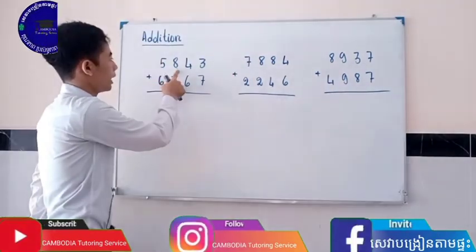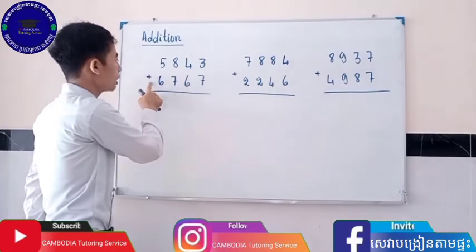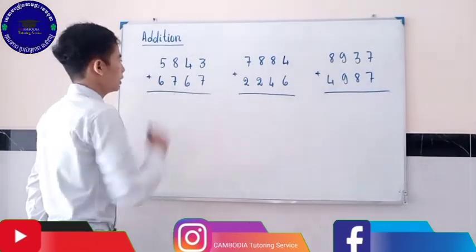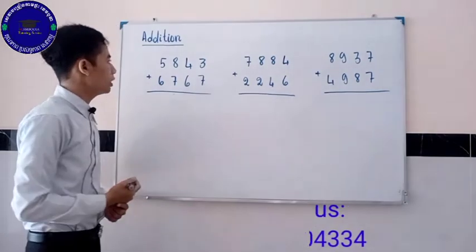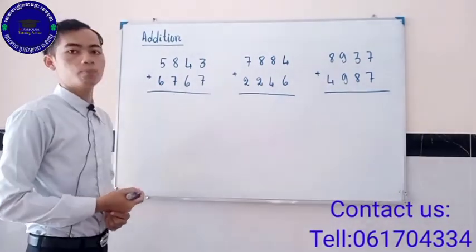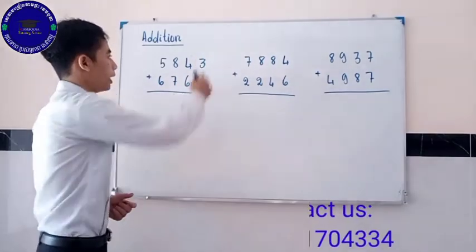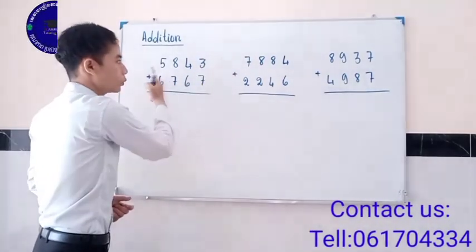5,843 plus 3,767. First we need to arrange the digits properly and then we add from up to down and right to left.